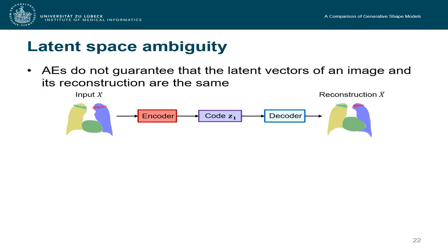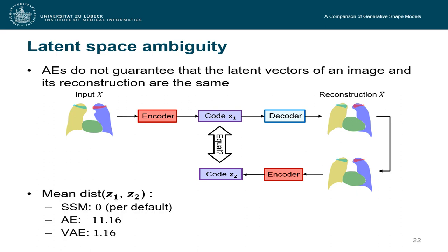Still, there is some ambiguity in the latent space of deep learning methods. If we encode an input image and reconstruct it, we would expect that the encoding of the input image is the same as the encoding of the reconstruction. This is indeed given for statistical shape models per default. However, if we measure those distances for autoencoding models, we will see that the values are much larger than zero, which means that the latent space is very ambiguous.